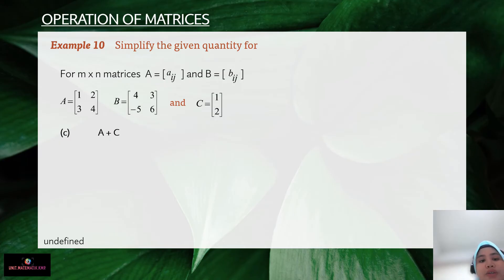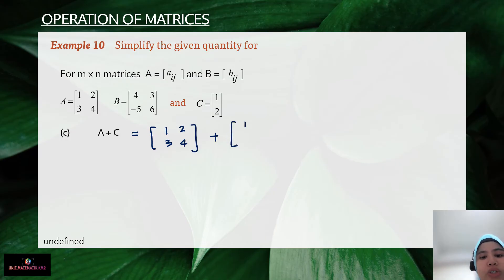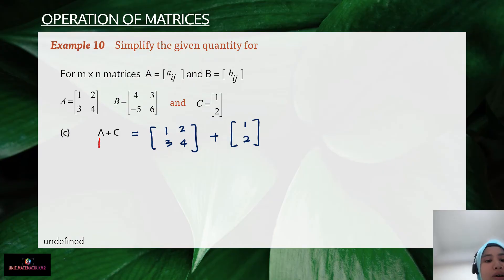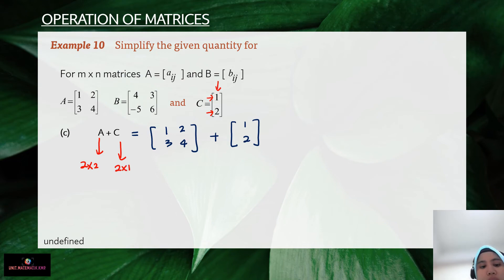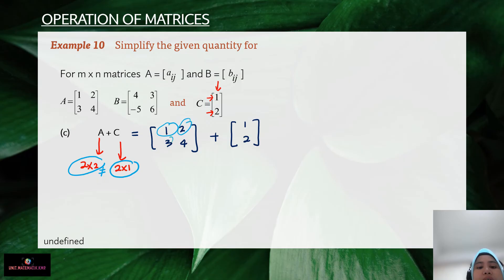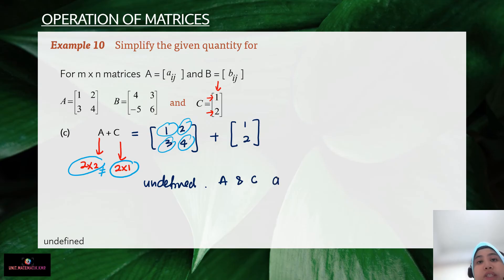The last part of Example 10 is A plus C. Matrix A has elements 1, 2, 3, 4, and matrix C has elements 1, 2. The important thing is that both matrices must have the same order because we need the same partners. For matrix A the order is 2 by 2, but for matrix C you have 2 rows and 1 column, so it is 2 by 1. The orders are not the same, meaning we don't have enough partners, so the answer is undefined.